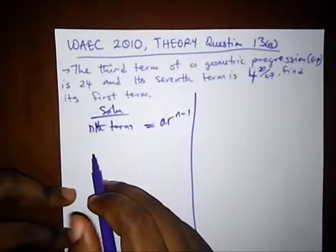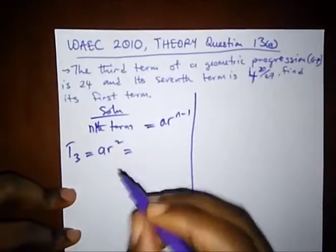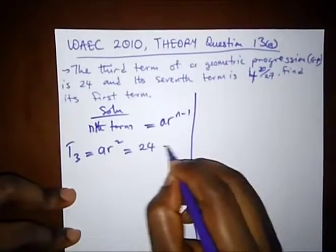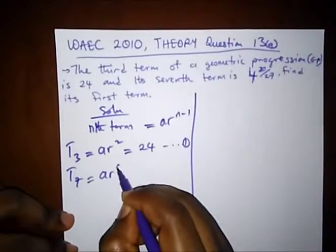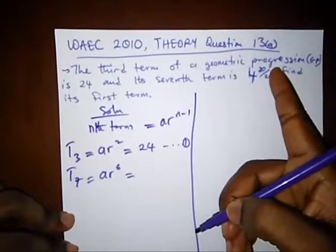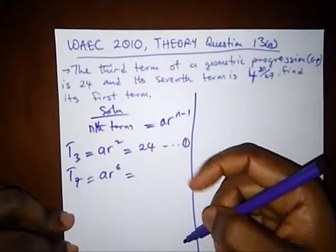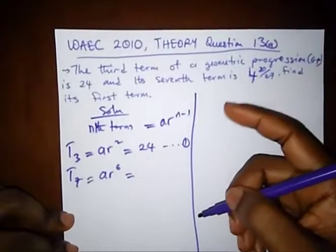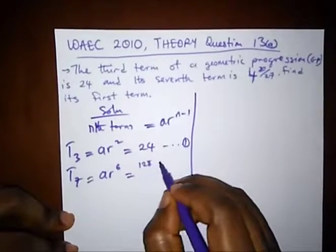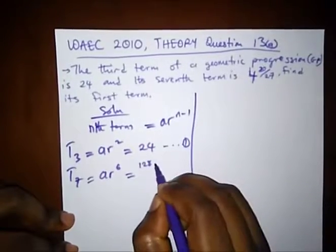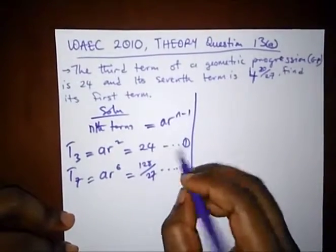So here it says the third term, that's T₃ = ar² = 24. That's equation one. And the seventh term is ar⁶ equals to, that's 4 20/27. Changing this to proper fraction, we have 27 times 4 gives us 108 plus 20, which gives us 128. Remembering our subject topic on fractions, 128 over 27. That's equation two.